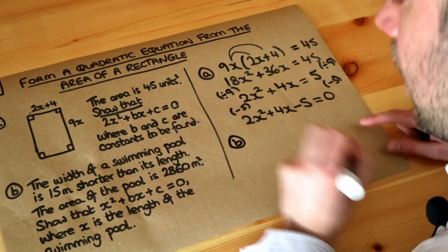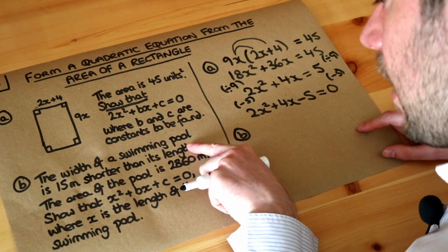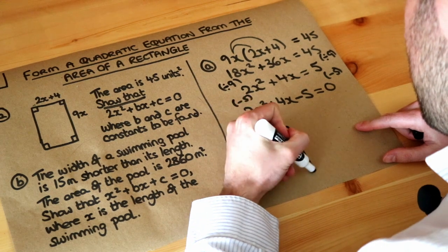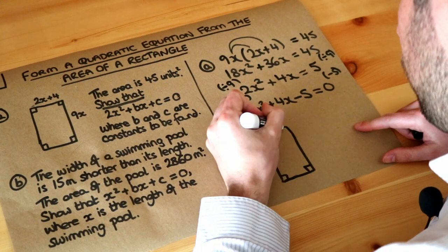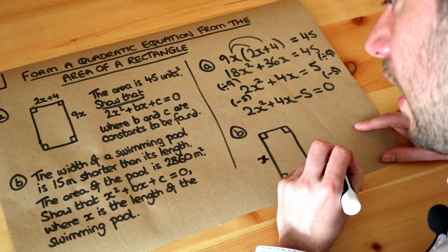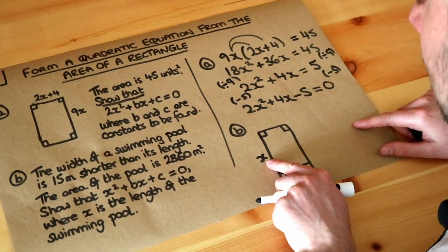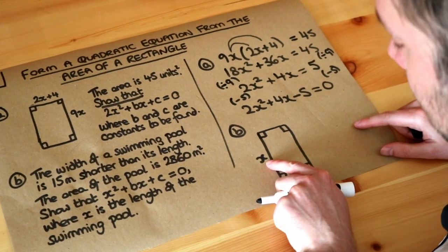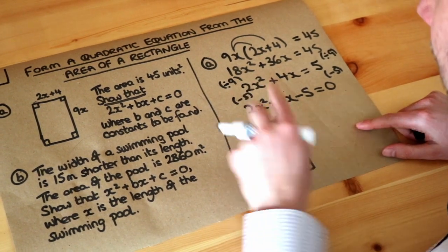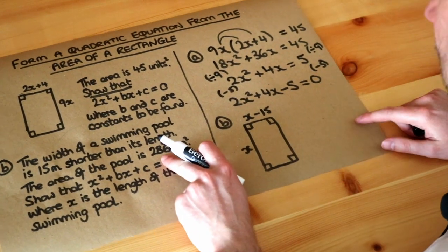What about part b? There's not a diagram this time. The width of a swimming pool is 15 metres shorter than the length, and you're also told that x is the length of the swimming pool. So if I do a rectangle, now the length is the longest side of the rectangle, and we're told that's x, so x is the longer side, and we're told the width is 15 metres shorter than the length. So what's 15 less than x, the length? Well, it's x minus 15. x minus 15 is 15 less than x, because we're just subtracting 15 from x.